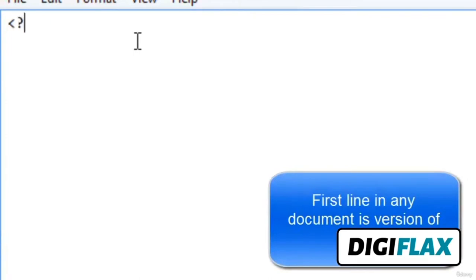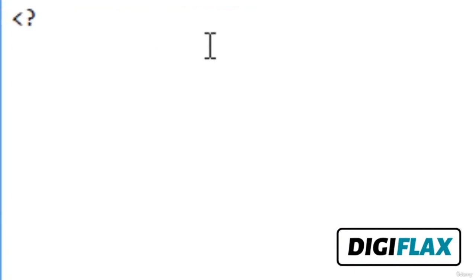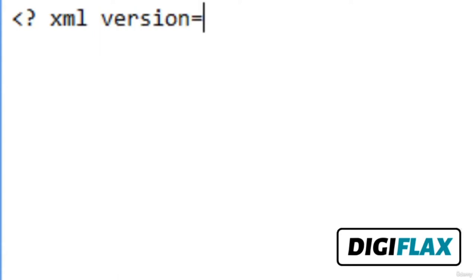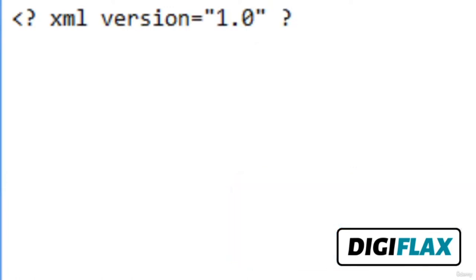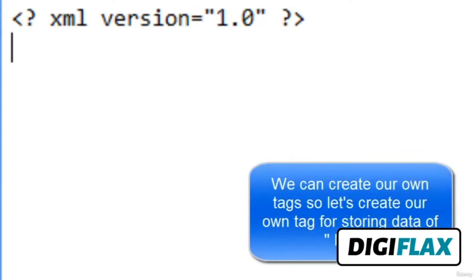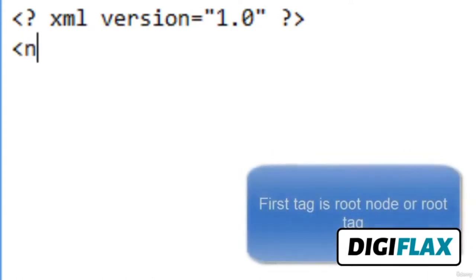First, you have to specify which version of XML you are using. Write the less-than sign and then a question mark — this is the start of any XML document. Then write: xml version="1.0" and close the XML version declaration. As we know, in XML we can create our own tags. We are creating an XML document for one note — I want to send a note to my friend. So I create a root node which is 'note'.